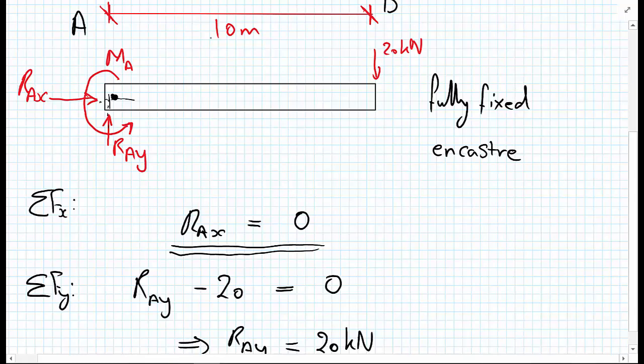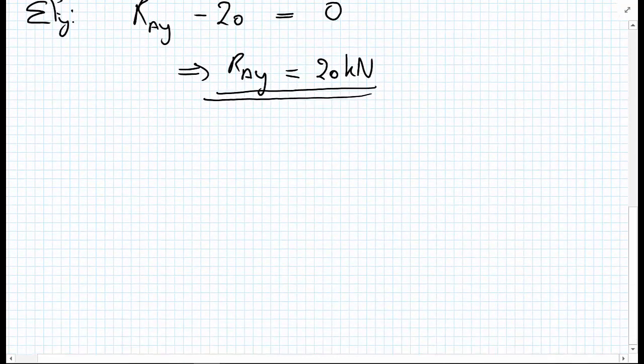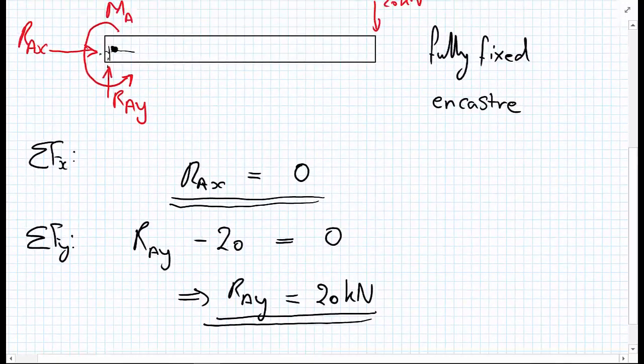So let's set up our equation of equilibrium. I'm going to take moments about point A. And I will get, so looking at the free body diagram, M_A, I'm assuming is going anti-clockwise, so it's a positive moment.